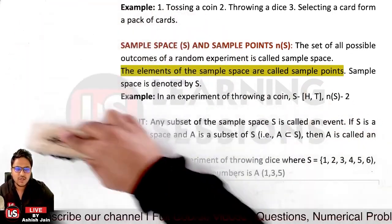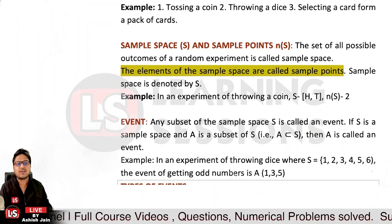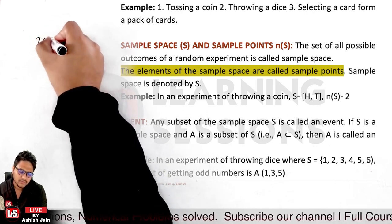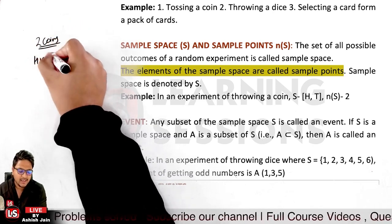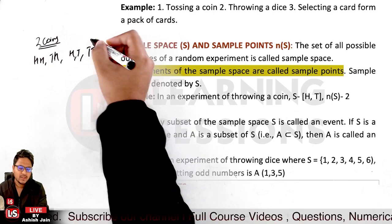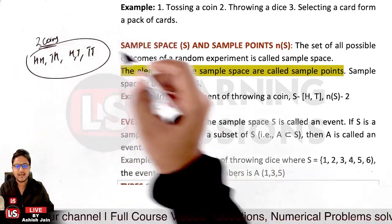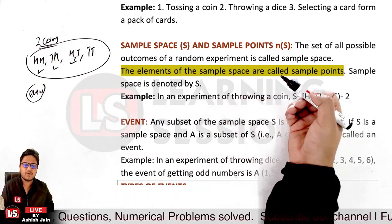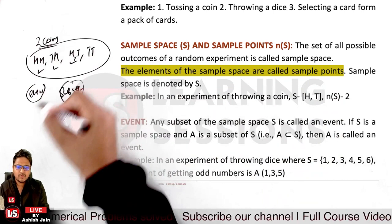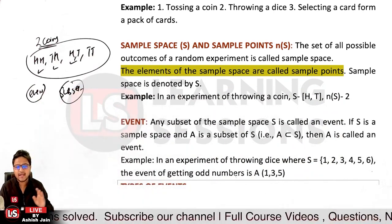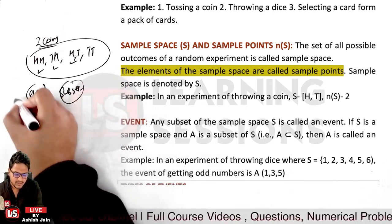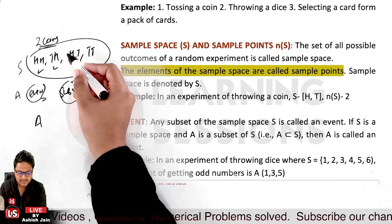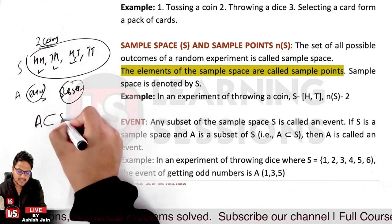An event is a subset of the sample space. If I toss 2 coins, the possible outcomes are head-head, tail-head, head-tail, and tail-tail. If I want at least one head, there are 3 favorable outcomes — that is the event A, which is a subset of the sample space S. Events are represented as A ⊆ S.